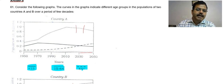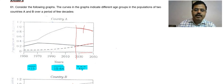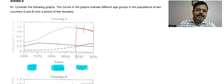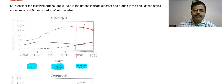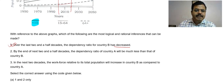Over the next two and a half decades for country A, the working force is going to decrease, although the number of dependents — people more than 64 years old — are going to increase. There is a significant partial decrease in the number of children under 15, but overall, because the workforce is going to decrease, the dependency ratio in A will increase.